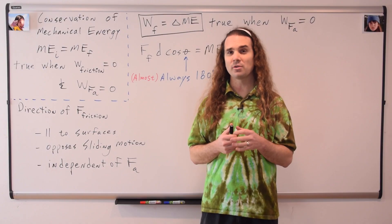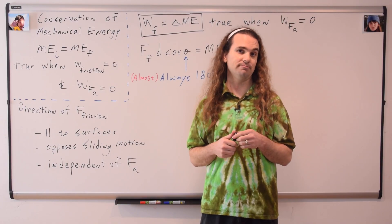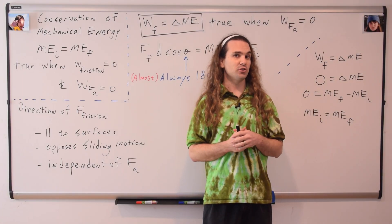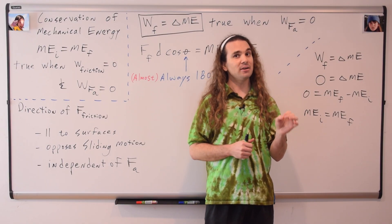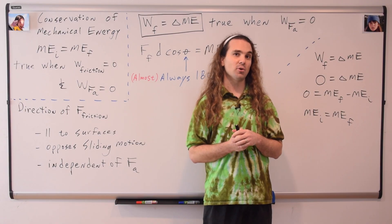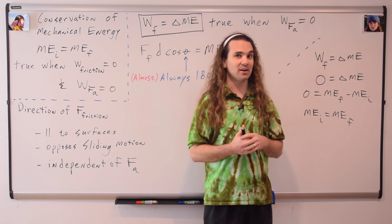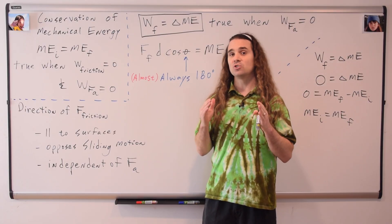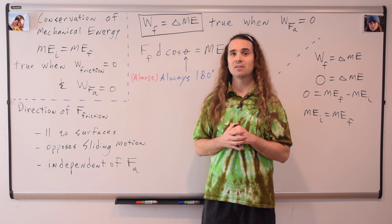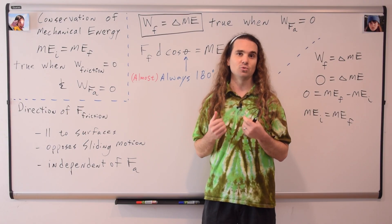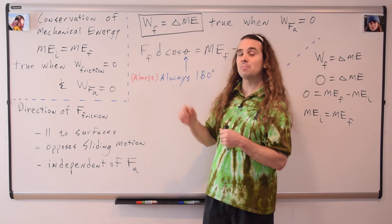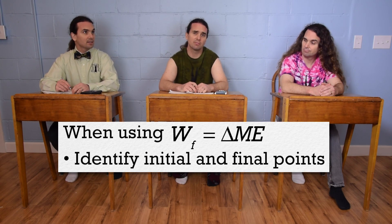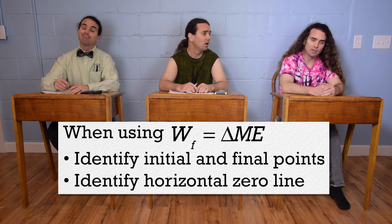Now, let's take a look at what happens to our work due to friction equation if the work due to friction is equal to zero. If the work done by the force of friction is equal to zero, that means zero equals the change in mechanical energy, which means zero equals mechanical energy final minus mechanical energy initial. Adding mechanical energy initial to both sides gives us mechanical energy initial equals mechanical energy final, or conservation of mechanical energy. This means conservation of mechanical energy is just a special case of the work due to friction equation equals change in mechanical energy, where the work done by friction is equal to zero. So, class, when we use the work done by friction equals change in mechanical energy equation, we need to clearly identify the locations of our initial and final points, and identify the location of the horizontal zero line.